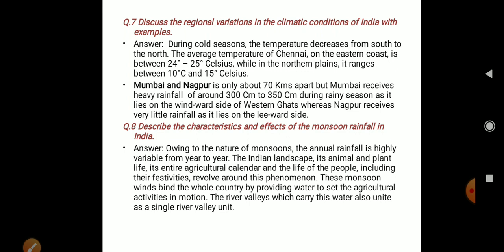Question number 8 (last): Describe the characteristics and effects of monsoon rainfall in India. Owing to the nature of monsoons, the annual rainfall is highly variable from year to year. The Indian landscape, its animals and plants, its entire agricultural calendar, and the lives of people including their festivities, revolve around this phenomenon.